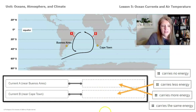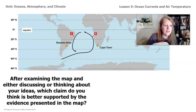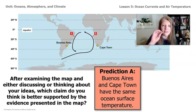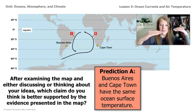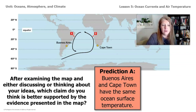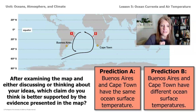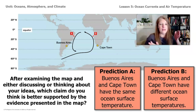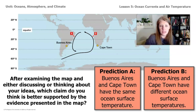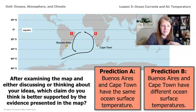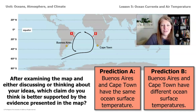The ocean current that passes Cape Town comes from the polar region, so it carries less energy and moves cooler water from the pole to that area. After examining the map, I'd like you to choose one of these two claims: do you think Buenos Aires and Cape Town would have the same ocean surface temperature, or do you predict they have different ocean surface temperatures? Pause the video, think about it, discuss with a partner, and be ready to share your thoughts.